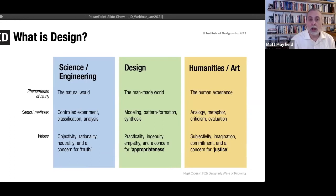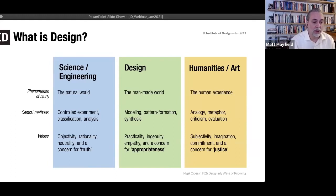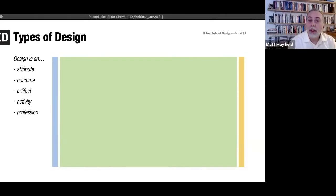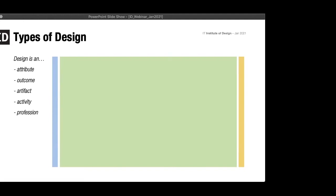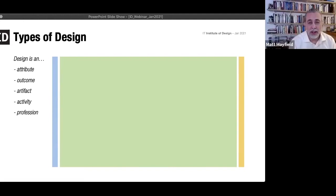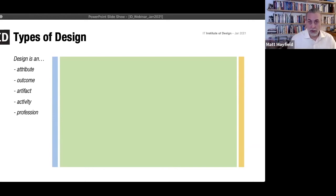That's helpful for some who aren't sure about what design is, but it doesn't quite answer our question, because we want to know what kind of design we practice here at the Institute of Design. As we expand and look into this field, design is a funny word — it's used in lots and lots of ways. It's the outcome of something we do, the object that is created, an attribute, an activity, a profession. There are all sorts of ways, so the word itself is a little problematic.